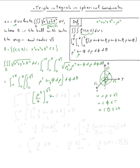Plugging in √3: (√3)⁴ = 9, so we get 9/4 · sin φ dφ, with φ from 0 to π, and θ from 0 to 2π. The integral of sin φ is −cos φ, so this becomes −(9/4) cos φ evaluated from 0 to π, times dθ from 0 to 2π.